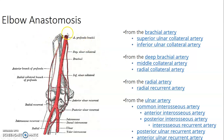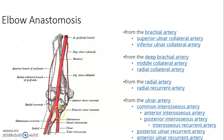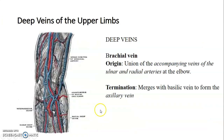To summarize the elbow anastomosis: from the brachial artery you have superior ulnar collateral and inferior ulnar collateral. From profunda brachii you have the middle collateral and radial collateral. From the radial artery you have the radial recurrent. From the ulnar artery you have the common interosseous, which divides into anterior and posterior interosseous. From the posterior interosseous you have the interosseous recurrent. The ulnar artery also gives posterior and anterior ulnar recurrent arteries.